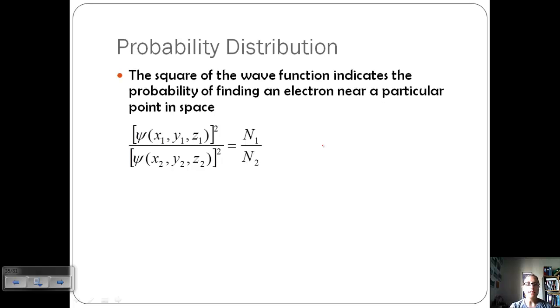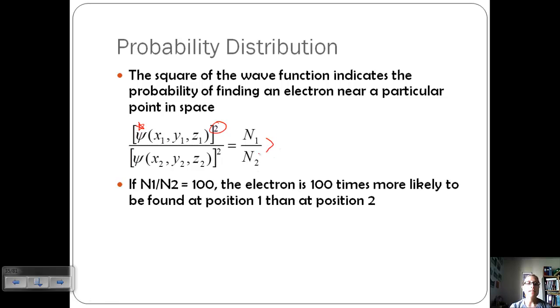Let's relate that to some probability. We're trying to predict where the electron's going to be or how it's going to move. The square of the wave function indicates the probability of finding an electron near a particular point in space. So now we're looking at probability. We've got the wave function and then its position in the x, y, z axis and we are squaring them. If n1 over n2 equals 100, this means that the electron is 100 times more likely to be found at position one than at position two. We're basically just calculating a probability. We can't say exactly that it's there for sure.